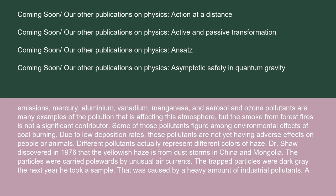Different pollutants actually represent different colors of haze. Dr. Shah discovered in 1976 that the yellowish haze is from dust storms in China and Mongolia. The particles were carried polewards by unusual air currents. The trapped particles were dark gray the next year, when he took a sample caused by a heavy amount of industrial pollutants.